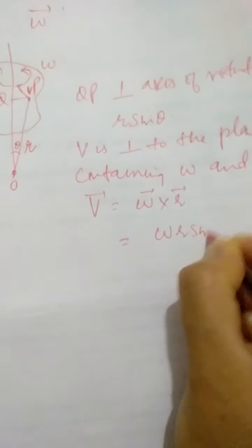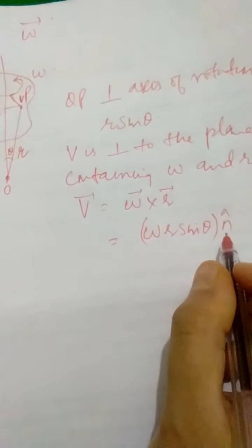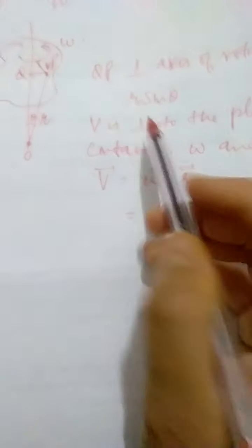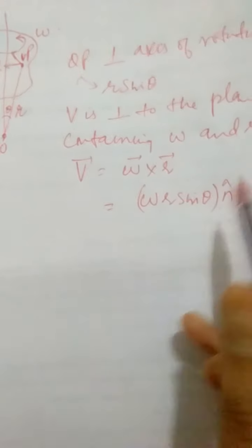So v is given by omega cross r, or written as omega r sine theta times n-hat, where n-hat is the unit vector perpendicular to the plane containing omega and r. The component r sine theta is the perpendicular distance from the axis, and omega r sine theta is clearly the magnitude of the cross product omega cross r. The unit vector n-hat points along the direction of the linear velocity of the particle.